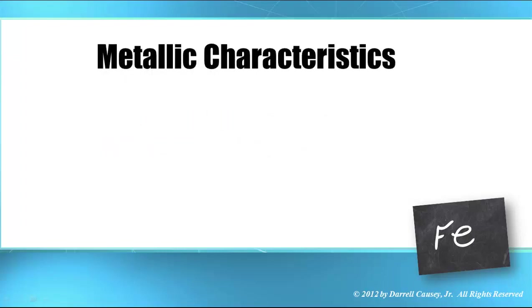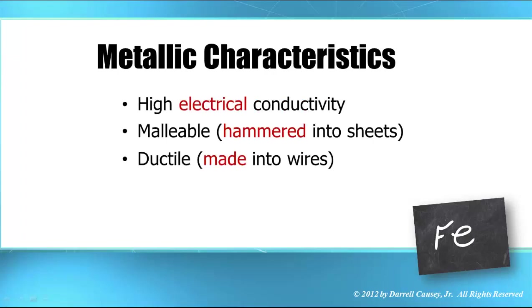And these bonds develop these metallic characteristics. They have high electrical conductivity. They are malleable, and they're ductile. And that just means that we're able to either hammer them out into sheets or into bowls or golden idols or whatever the situation might be.